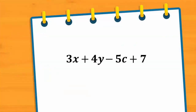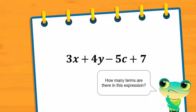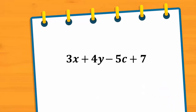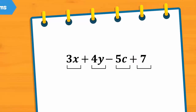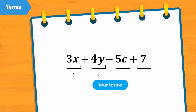Look at this algebraic expression: 3x plus 4y minus 5c plus 7. How many terms are there in this expression? The parts of the algebraic expression that are connected by plus and minus signs are called terms of the expression. In this expression, there are four terms: 3x, 4y, minus 5c, and 7.